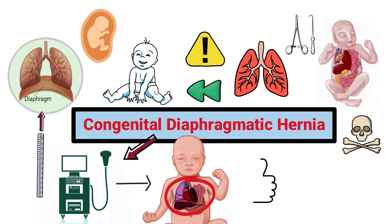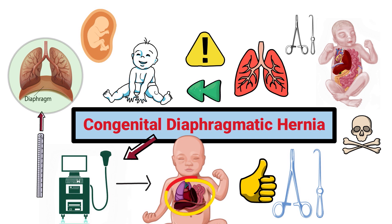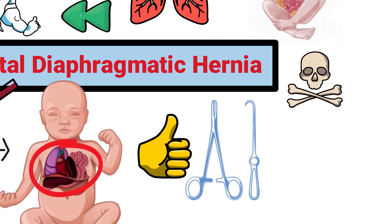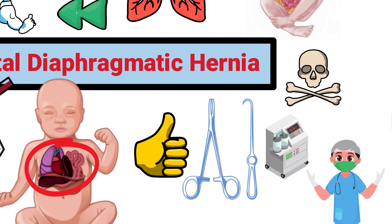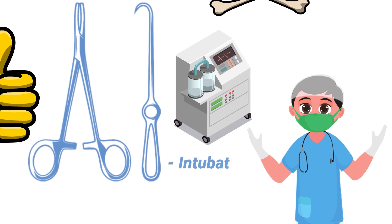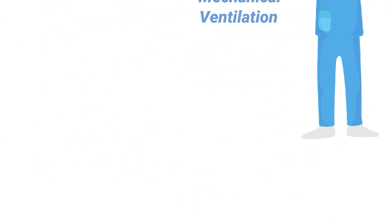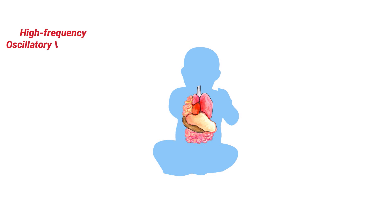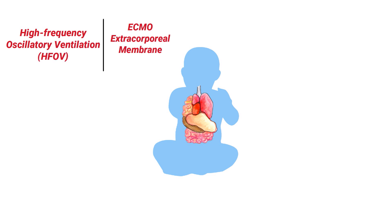A congenital diaphragmatic hernia must be corrected with surgery in order to close the defect. The respiratory therapist would be responsible for assisting with intubation and mechanical ventilation. Infants with this condition may benefit from high frequency oscillatory ventilation. ECMO, or extracorporeal membrane oxygenation, may also be indicated in severe cases.